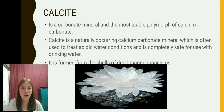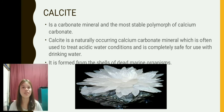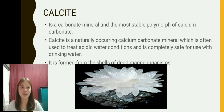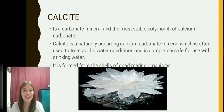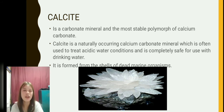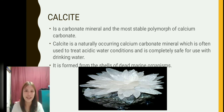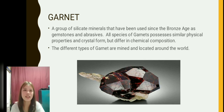Calcite is a carbonate mineral and the most stable polymorph of calcium carbonate. It is a naturally occurring calcium carbonate mineral often used to treat acidic water conditions and is completely safe for use with drinking water. It is formed from the shells of dead marine organisms. Calcite is one of the most ubiquitous minerals and is important in sedimentary environments. It is used in construction aggregates and in the production of lime and cement.